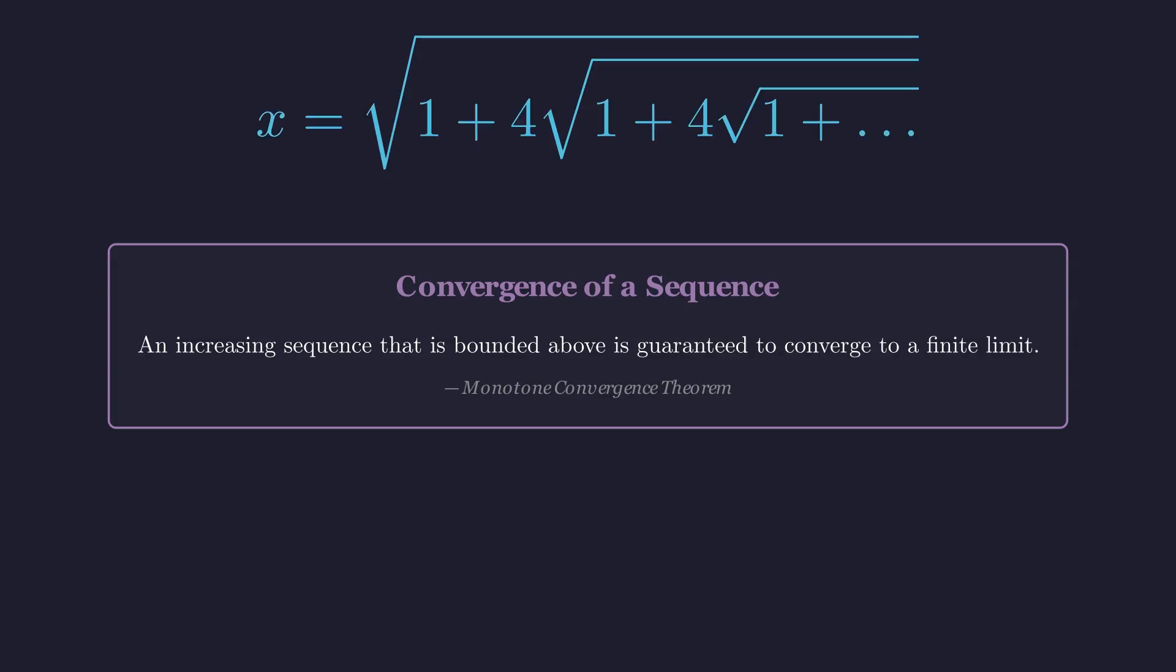Now here's the key insight. Look at what's inside that first square root. After the 1 plus 4, we have exactly the same pattern repeating again. This self-similarity is what makes the problem solvable.